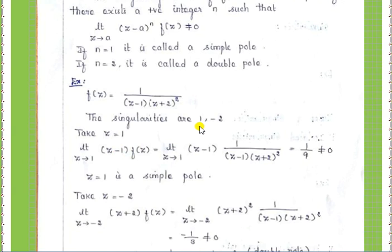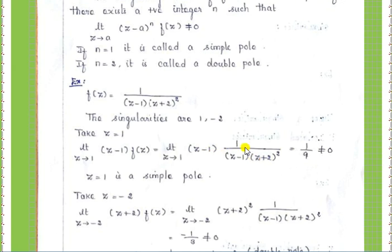For the first singular point z equal to 1, we substitute into the pole formula: limit z tends to 1 of z minus 1 to the power 1 times f of z, so n equal to 1. Substituting f of z equal to 1 by z minus 1 into z plus 2 whole square, the z minus 1 terms cancel, leaving 1 by z plus 2 whole square. Replacing z equal to 1 gives 1 by 3 square, which is 1 by 9 — a non-zero value. Therefore z equal to 1 is a simple pole, since z minus 1 has power 1.